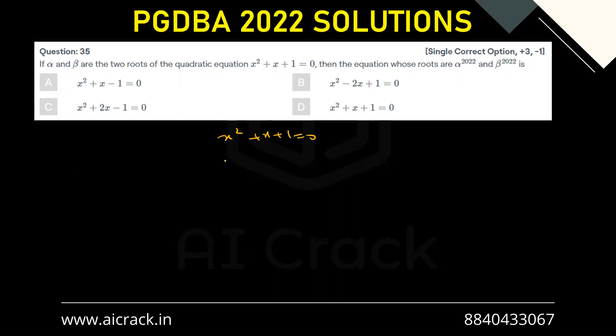Since alpha and beta are the roots of the equation x^2 + x + 1 = 0, we know alpha^2 + alpha + 1 = 0 and beta^2 + beta + 1 = 0. If I multiply by (alpha - 1) and (beta - 1) on both sides, I'll get alpha^3 - 1 = 0 and beta^3 - 1 = 0.